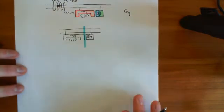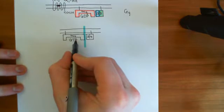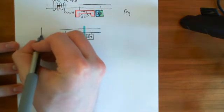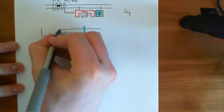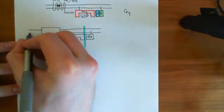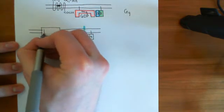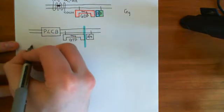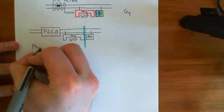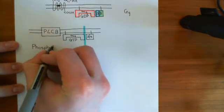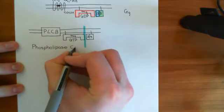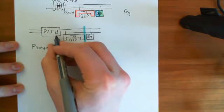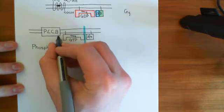We are going to concentrate on the alpha-Q-GTP protein. What does the alpha-Q-GTP protein activate? One of its targets is an enzyme within the phospholipid bilayer — phospholipase C, and specifically phospholipase C of the beta type, so PLC-beta. PLC-beta stands for phospholipase C beta. Alpha-Q-GTP will bind to this beta form of phospholipase C and activate it.